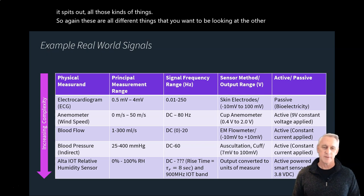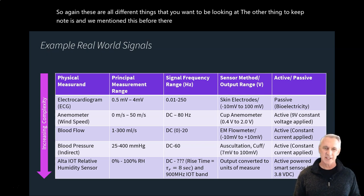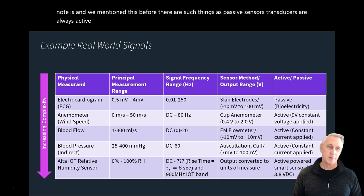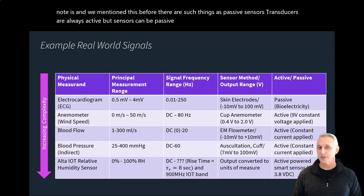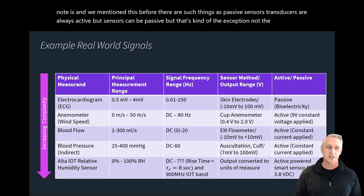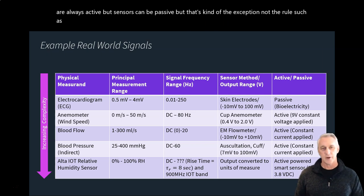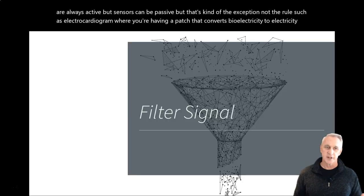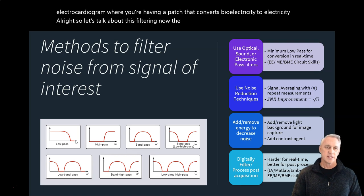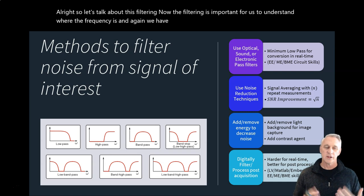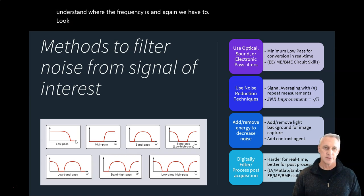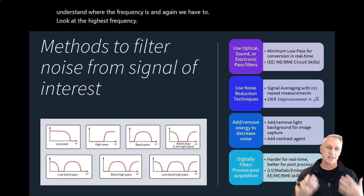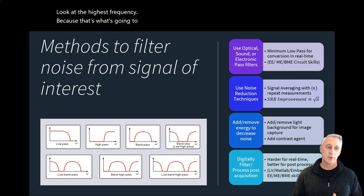Now let's talk about filtering. Filtering is important for defining where the frequency content lies. We look at the highest frequency because that tells us where to set our cutoff. There are different types of filters — we won't cover all the mathematics, but there's a low-pass filter, which cuts off above the highest frequency and keeps everything below.